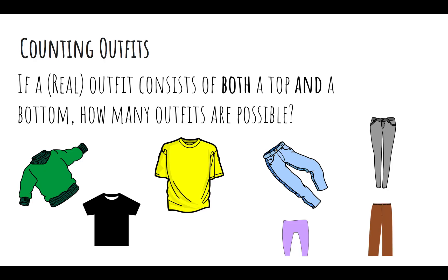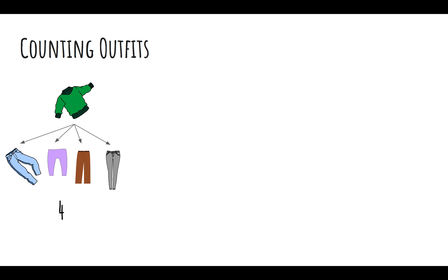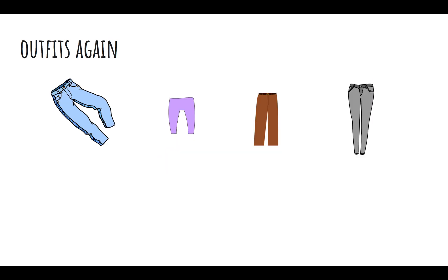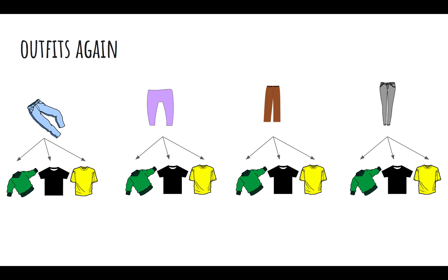Now we'll try to count real outfits. If a real outfit consists of both a top and a bottom, how many outfits are possible? For the first shirt, we actually have four pairs of pants we can choose. Same for the second shirt, and same for the third. By the sum rule, we can add these up and we'll have 12 different outfits. We could have also started with pants first — for each of the four pairs of pants, there are three possible shirts, so there would also be 12 possible outfits.